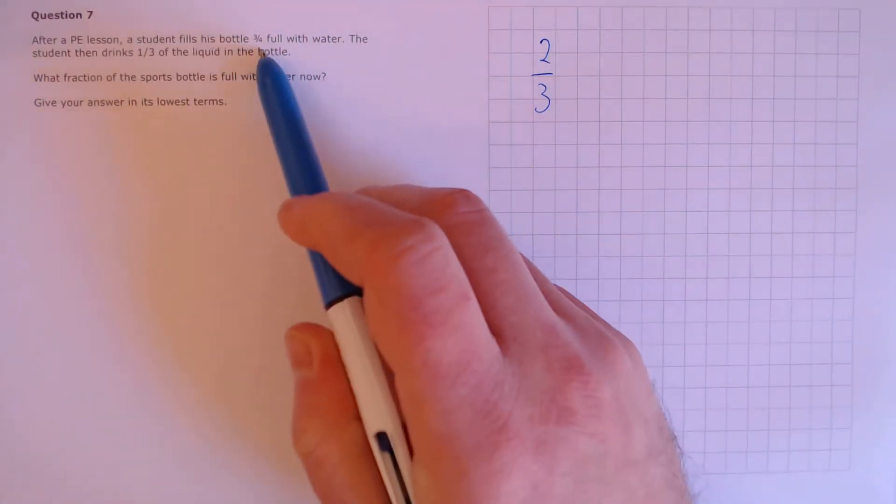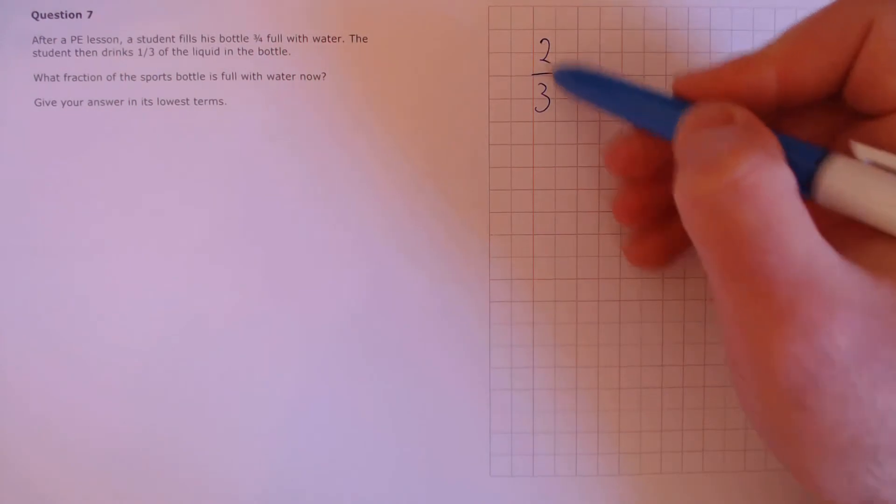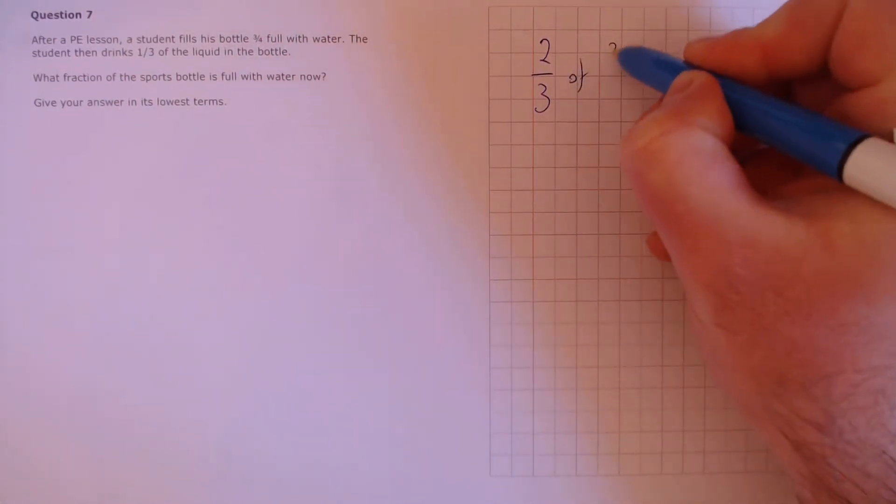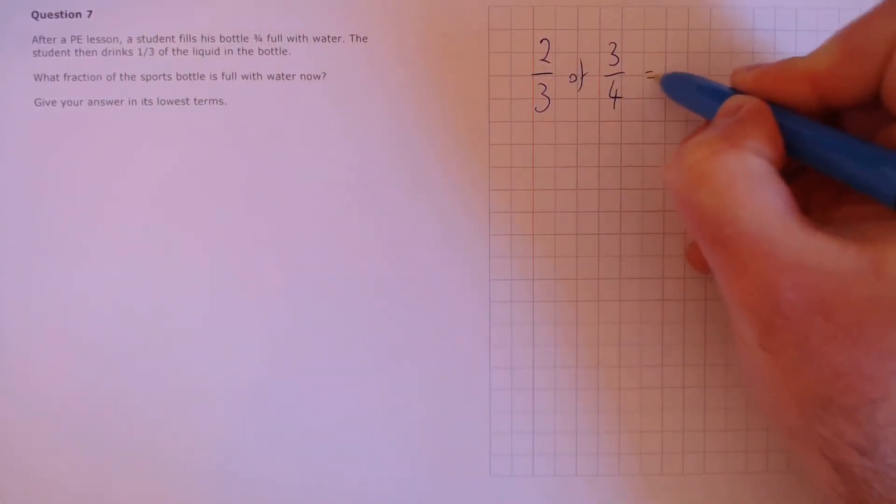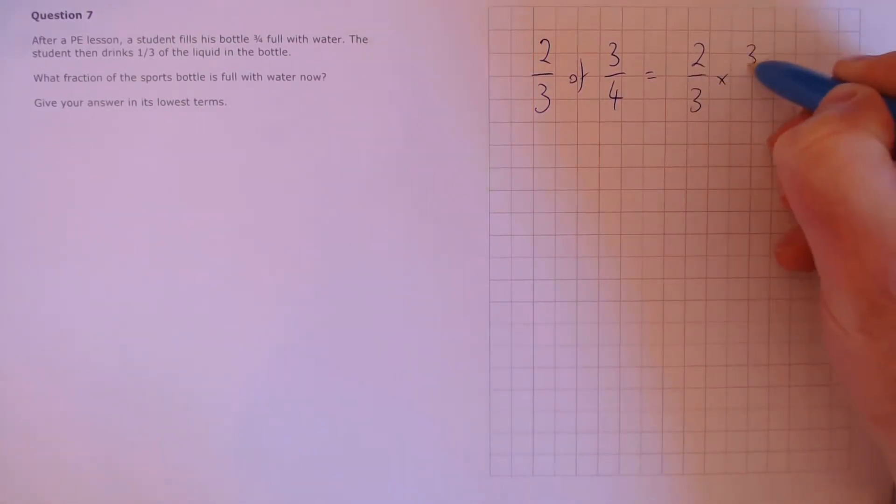We know that originally the bottle was three-quarters full, so we're looking for two-thirds of three-quarters, which is the same as multiplying two-thirds by three-quarters.